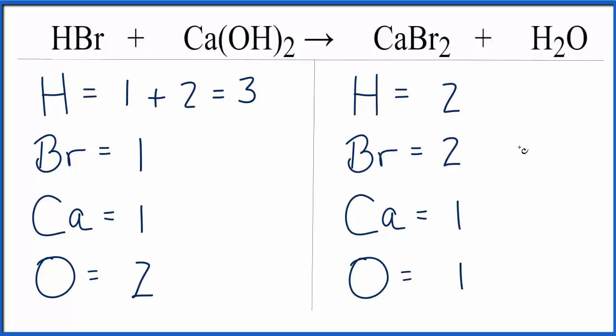What we could do is try to fix the bromines first and see if that also fixes the hydrogens. I think it might. So if we put a two, a coefficient, in front of the HBr, we're trying to get two bromines here to balance these two. One times two. That'll give us two bromines. Those are balanced.